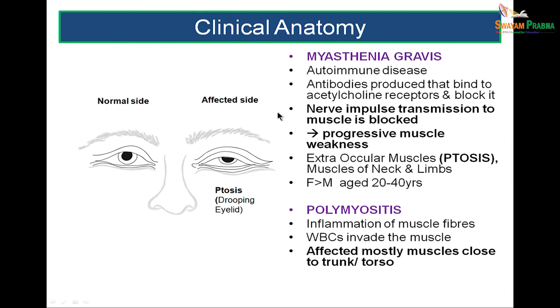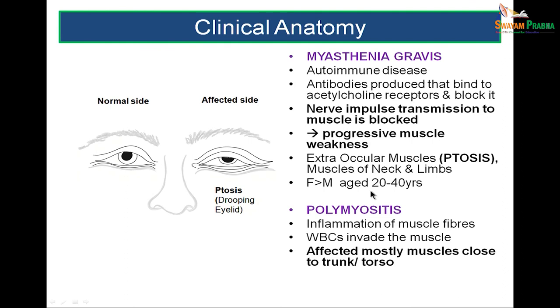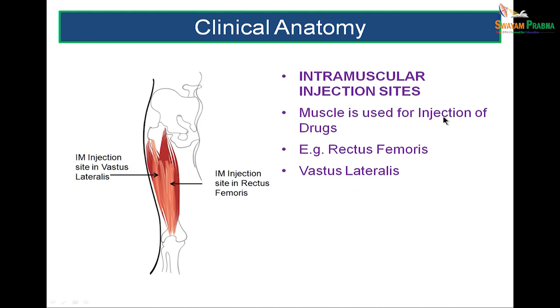Myasthenia gravis is an autoimmune disease where antibodies are produced that do not allow receptors to work well, blocking nerve impulse transmission and leading to muscle weakness. This is seen as ptosis — a drooping upper eyelid. Extraocular muscles are most commonly affected; the person may turn their head backwards to look forwards as the eyelids tend to droop. It is seen more in females around age 20 to 40. Polymyositis is inflammation of muscle fibers where white blood cells invade them, affecting mostly muscles close to the trunk.